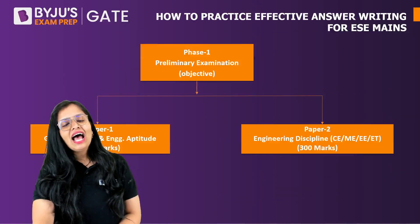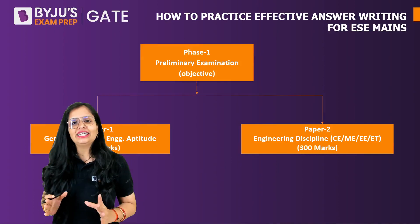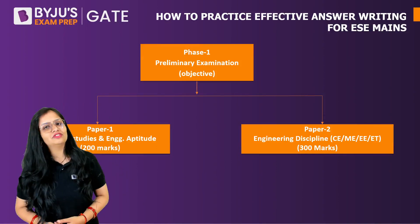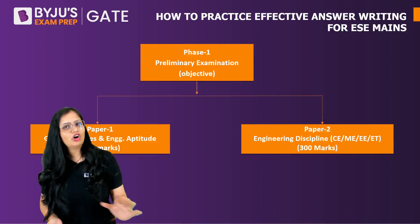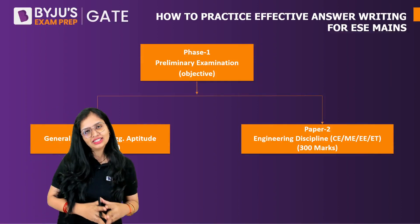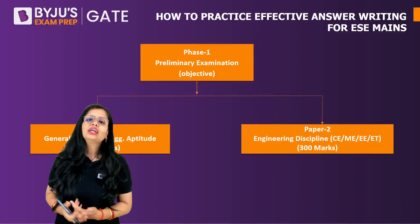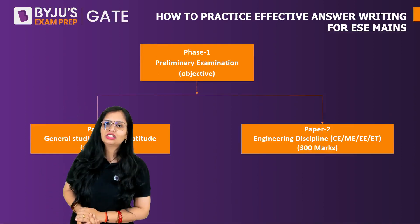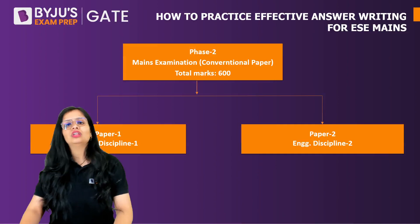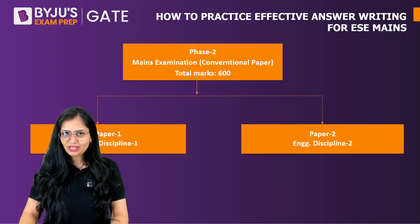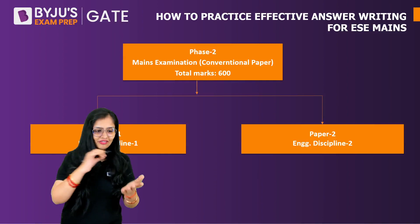In the IES examination — also called ESE, Engineering Services Examination — you have Phase One, which is the preliminary examination. It is purely objective. You have two papers: Paper One is General Studies and Engineering Aptitude, and Paper Two is your engineering discipline — civil, mechanical, electrical, or electronics and telecommunication. This paper is of 300 marks. When you clear the preliminary examination, you go to the mains examination, which is a conventional paper — meaning you have to write theory and solve numericals.